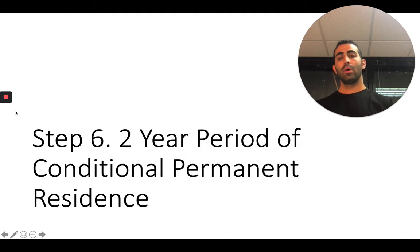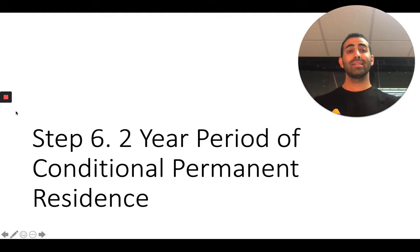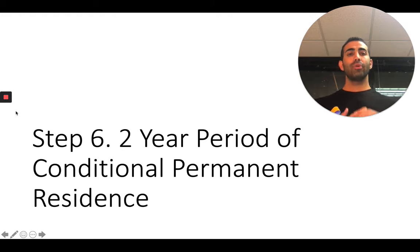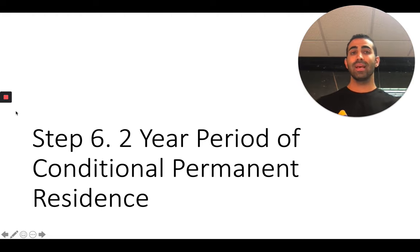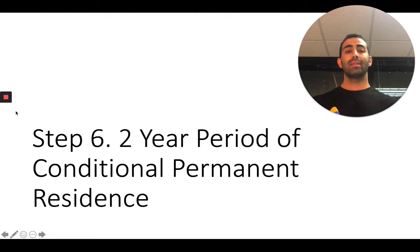That's step five. Step six: once your adjustment of status has been approved, or you've entered the United States on your immigrant visa, you're now in a two-year period of conditional permanent residence. This means you have a green card with a two-year expiration date. During this period, you must keep your funds invested in the business and you must create 10 full-time jobs for U.S. workers.